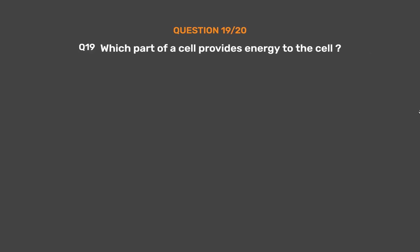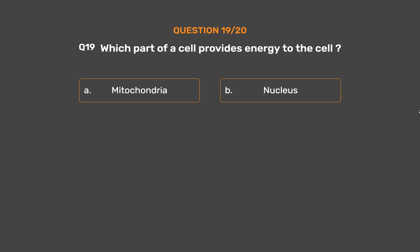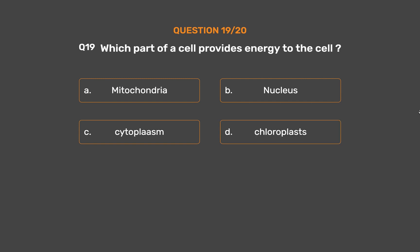Question number 19. Which part of a cell provides energy to the cell? Option A: Mitochondria. Option B: Nucleus. Option C: Cytoplasm. Option D: Chloroplasts.